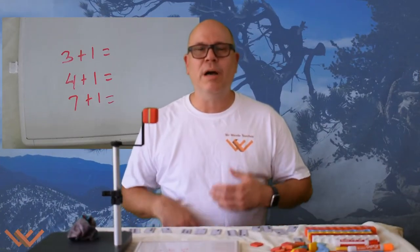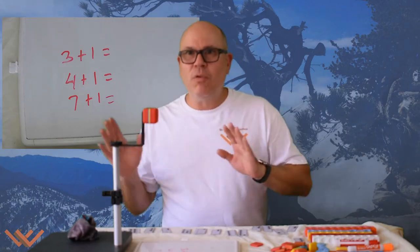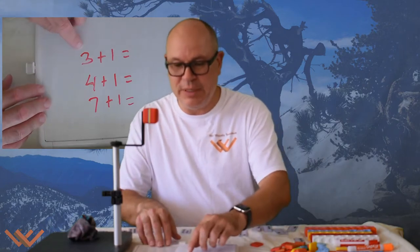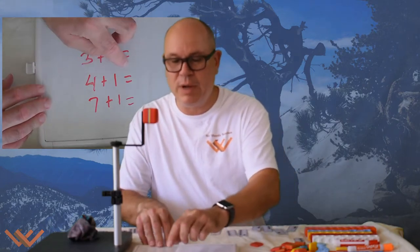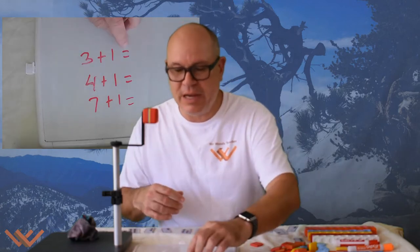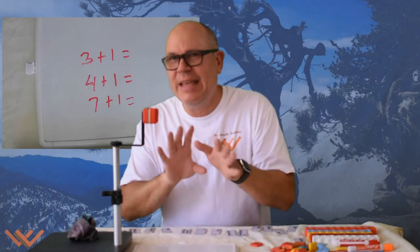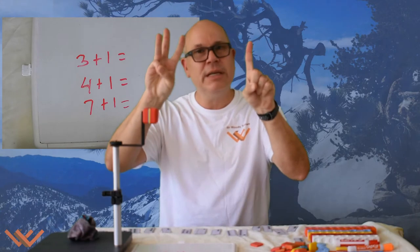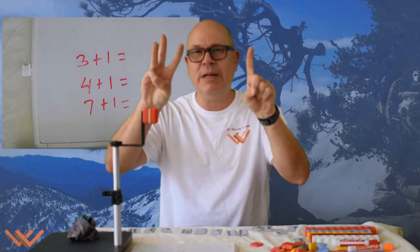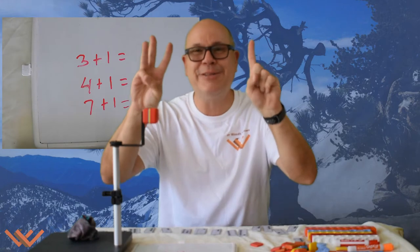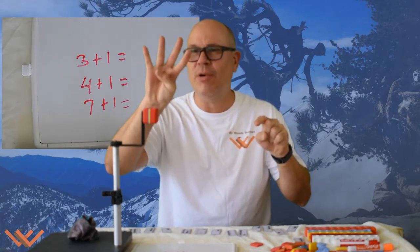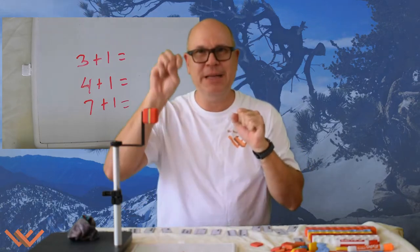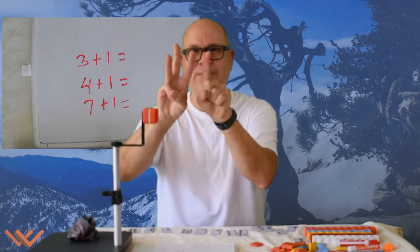Alright friends, we're going to work on our first thing: a number plus one more. I have down here three different number sentences — three plus one, four plus one, and seven plus one. That equals sign means 'this is what the answer is.' So let's take a look at three plus one. You already know this is three — what comes after three? What's one more than three? Right, it's four. So three plus one is four. Can you do that with me? Three plus one is four.